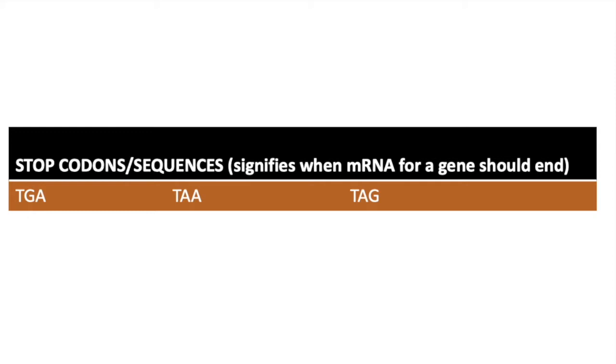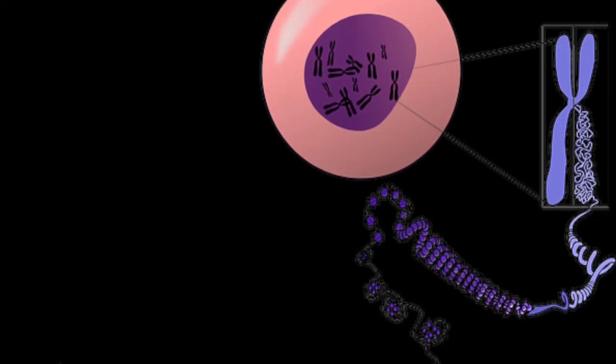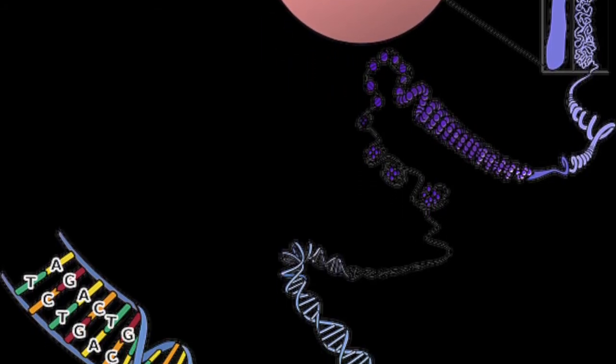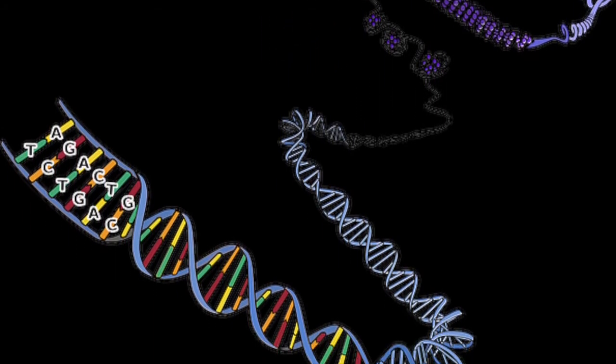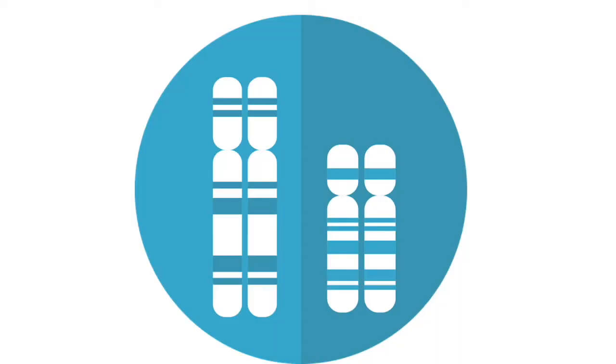So in the instance where there's a frame shift mutation, so an insertion or deletion for both copies of a gene, that gene is said to be knocked out. Don't forget that in humans or in diploid organisms like ourselves, there are always two copies of a gene.